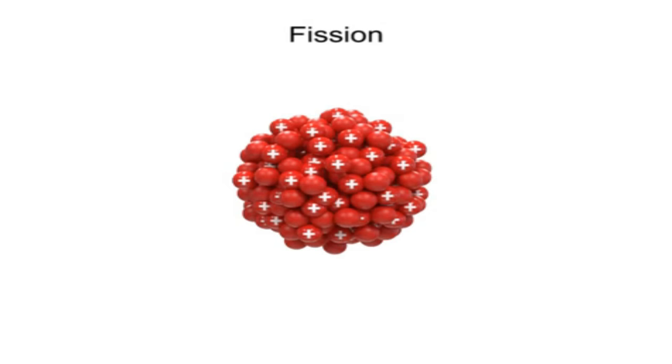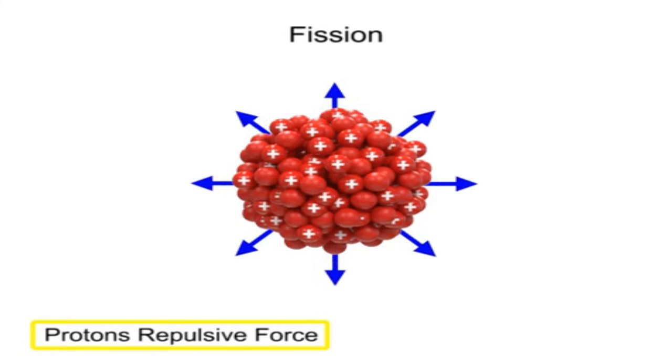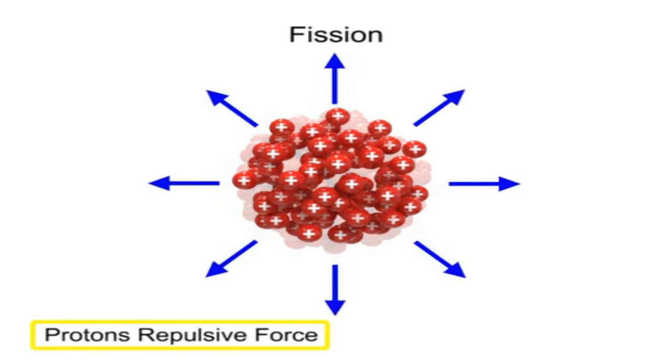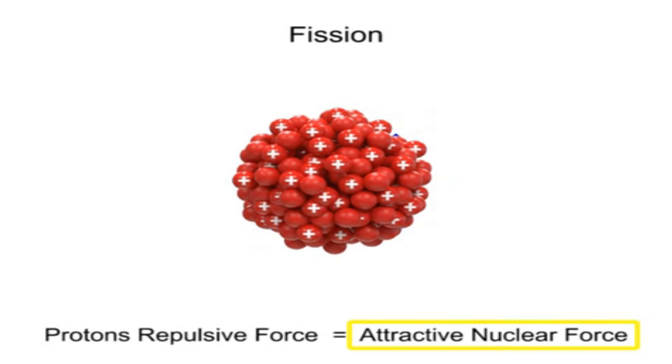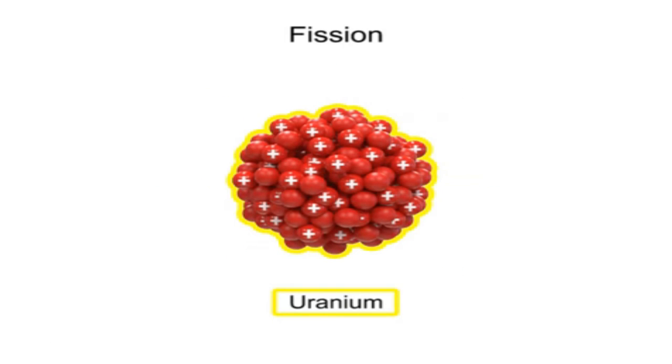The stability of the nucleus of an atom is maintained by the balance between the repulsive electrical force among protons and the attractive nuclear forces holding the nucleus together. With uranium, this balance is unstable.